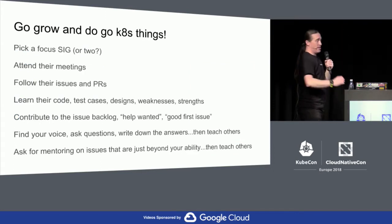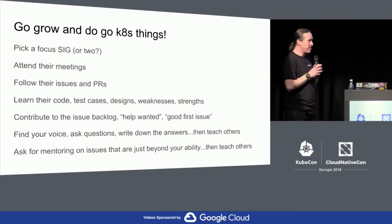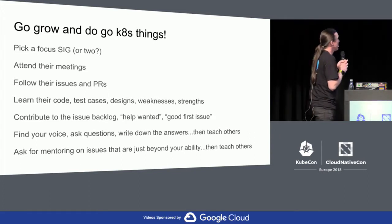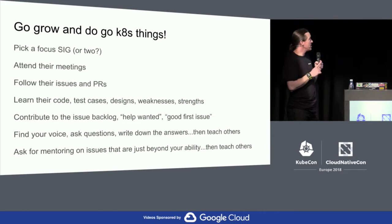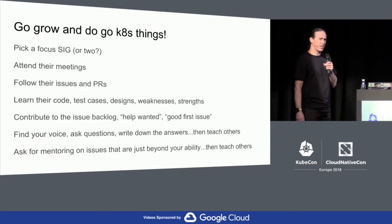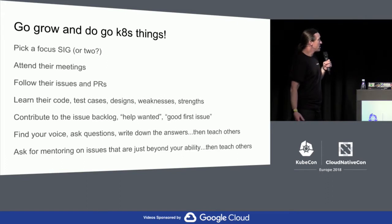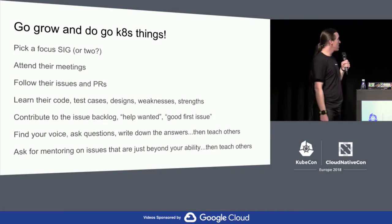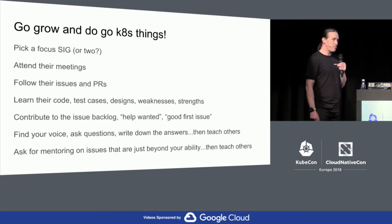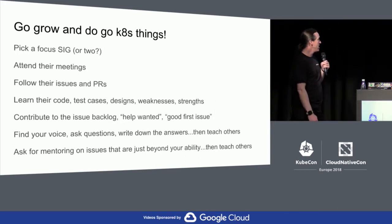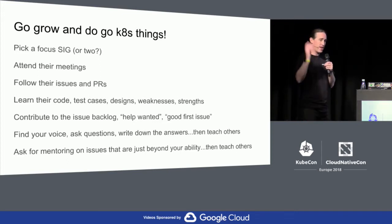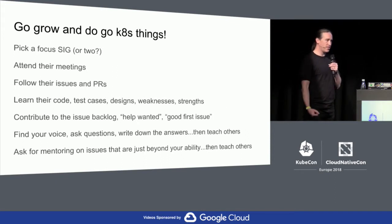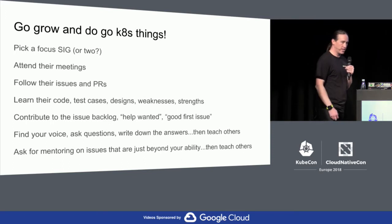So with that, I hope you all go out there, get active, get doing things, try to grow and do great things in Kubernetes. Pick some SIGs to focus on — maybe a couple. Really start attending their meetings, following what they do, looking at their issues and PRs and code reviews to learn. As you learn the code and test cases, you'll start to understand the designs and weaknesses. Contribute to the issue backlog, look for 'help wanted' or 'good first issues,' and really find your voice. Ask questions, write down the answers, and then start teaching others — because there will be others following you. Raise your hand and ask for mentoring, challenge yourself, and then try to lead and teach others.